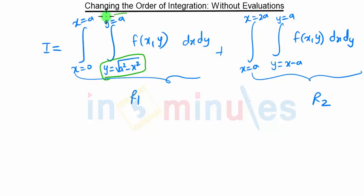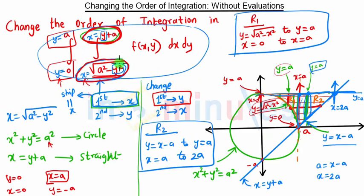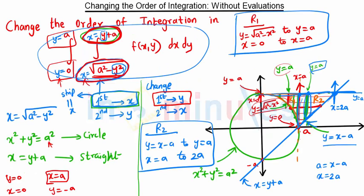In this result, we first integrate with respect to y and second with respect to x, whereas in the original question it was first with respect to x and second with respect to y. The basic procedure is: first find the order of integration, then draw the diagram and find the region. After finding this region, if we had a strip parallel to the x-axis, we now consider a strip parallel to the y-axis to cover the same region. This is how we solve problems on changing the order of integration — this is without evaluation. More such problems will be in our next video, so stay tuned.